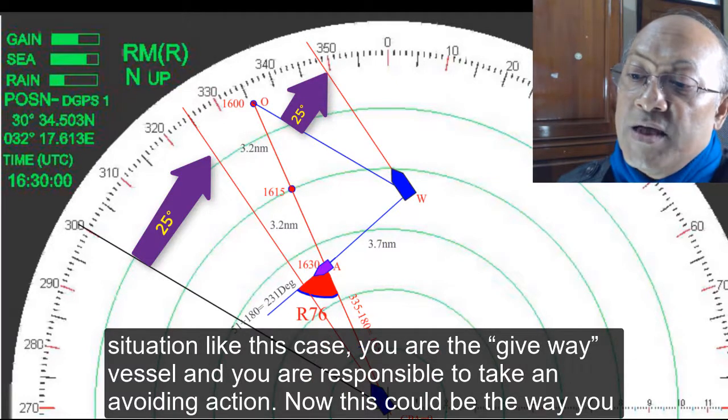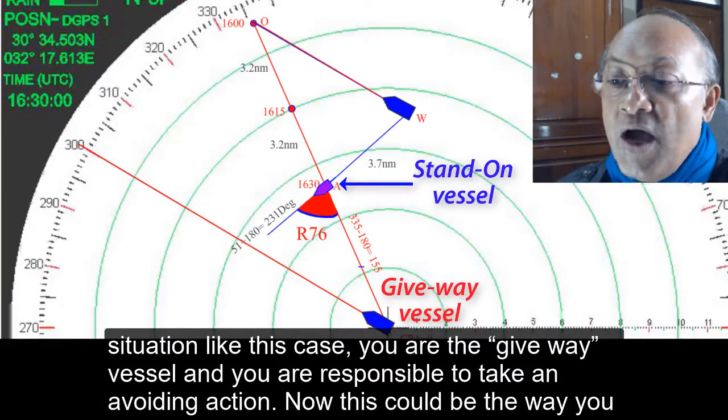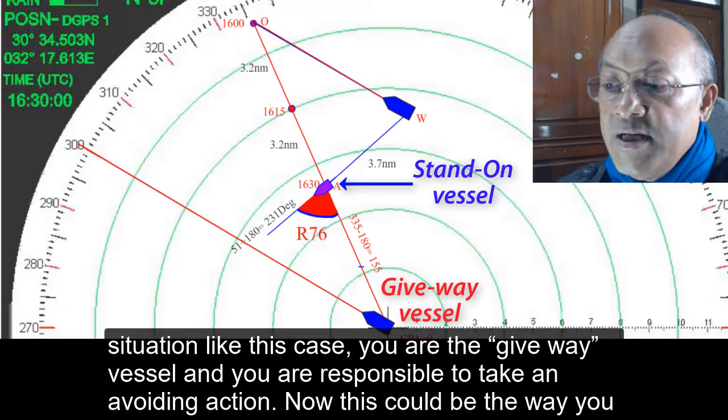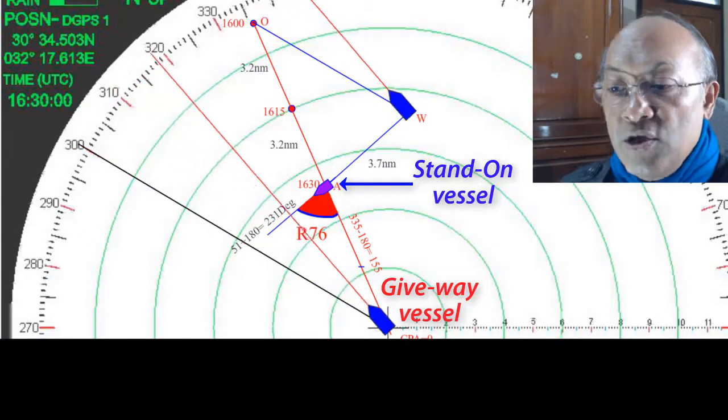In a crossing situation like this case, you are the give-way vessel and you are responsible to take an avoiding action. This could be the way you would take.